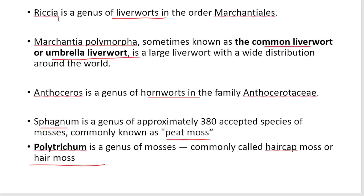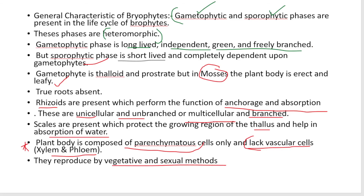These examples belong to: liverworts — Marchantia (common liverwort, umbrella liverwort), Anthoceros (hornwort), Sphagnum (peat moss), and Polytrichum (hair cap moss).